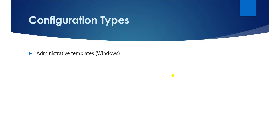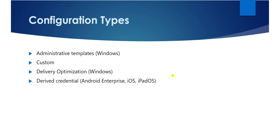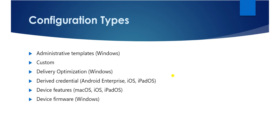Let's understand how many types of configuration profiles there are. We have the administrative template, which we are going to test in this video. We also have custom, delivery optimization — which is used under Windows — credential delivery, which is specifically used for Android, iOS, and iPad. Device features can be deployed on Mac, iOS, and iPad. Device firmware is specifically for Windows, and Windows device restrictions.